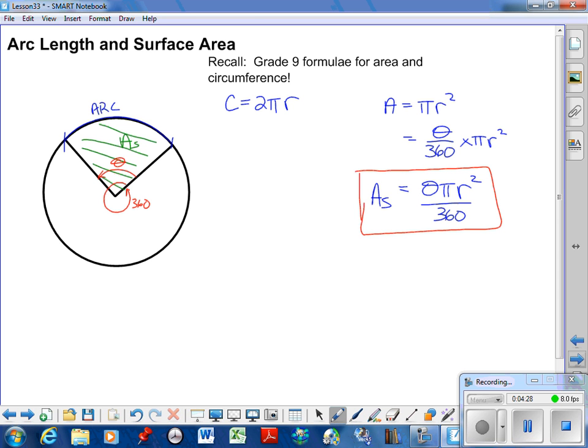Similarly with arc length. Circumference is for a whole 360 degrees, so arc length is some proportion of that. The arc length formula is θπr. The 2 and the 360 will reduce to lowest terms, so θπr over 180. That will give us our arc length.